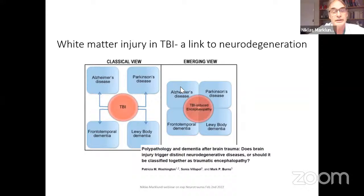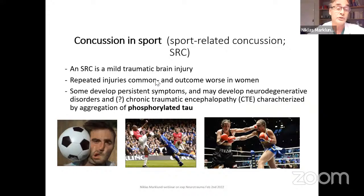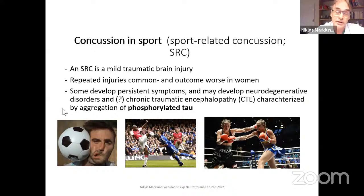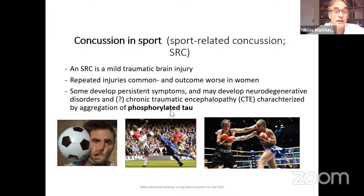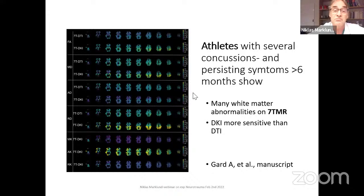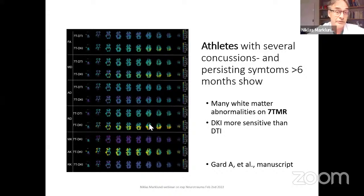We have a cohort of young athletes with persistent symptoms after typically several concussions. We use 7 Tesla MRI to study them — everything shown in bright color represents white matter abnormalities using DTI and DKI. In another cohort with persistent symptoms we actually see pathological aggregation of tau in 25-year-old athletes and some neuroinflammation. Comparing with young TBI patients, they also have more substantial tau aggregation and more neuroinflammation at the chronic phase, more than six months post-injury.